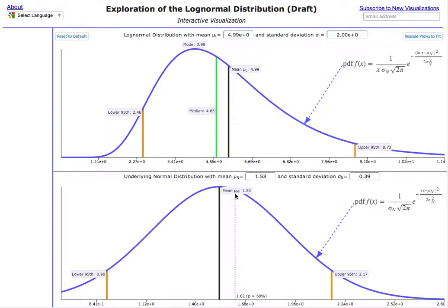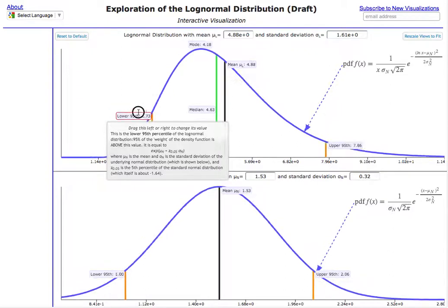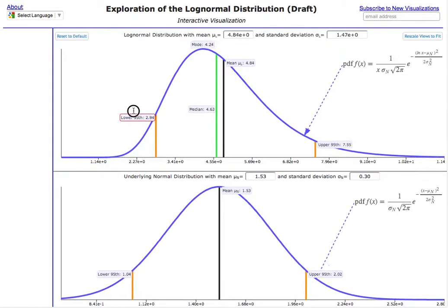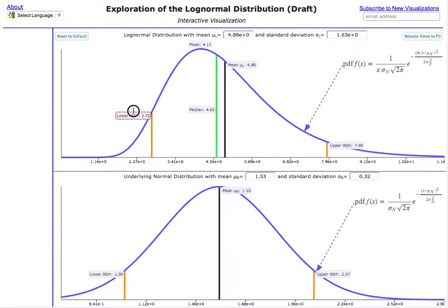You can do the same thing on the normal distribution. But also what you can do, if you click, you can change it and see the impact of changing. For example, in this case, the lower 95th, how that affects the mean, all the other parameters, and how it affects those properties of the underlying normal distribution.